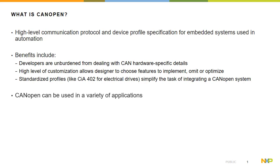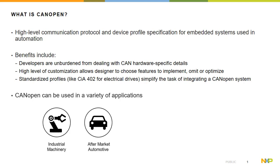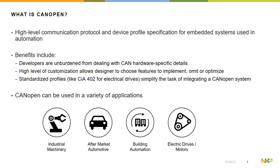CANopen was originally designed for motion-oriented machine control systems, but today it's used in various application fields such as industrial machinery, aftermarket automotive, building automation, electric drives and motors, and medical equipment.